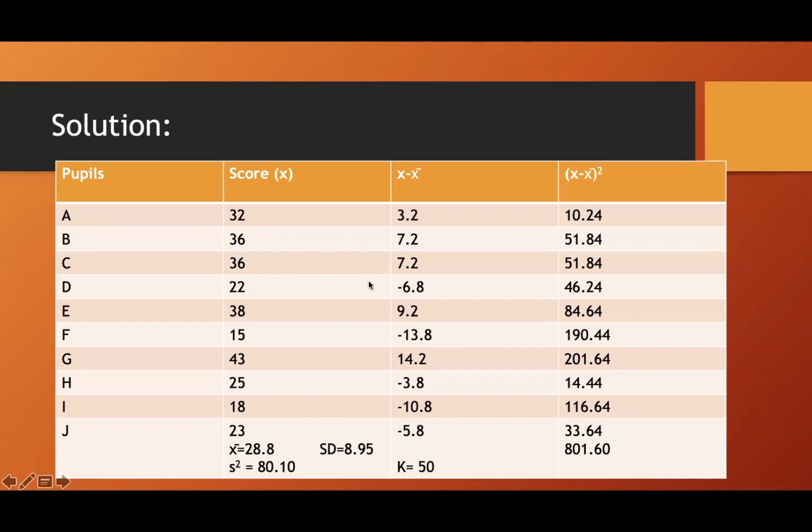38 minus 28.8 is 9.2, and so on. Until 23 minus 28.8, you have negative 5.8. After that, you need to square. So count to come up a positive answer.